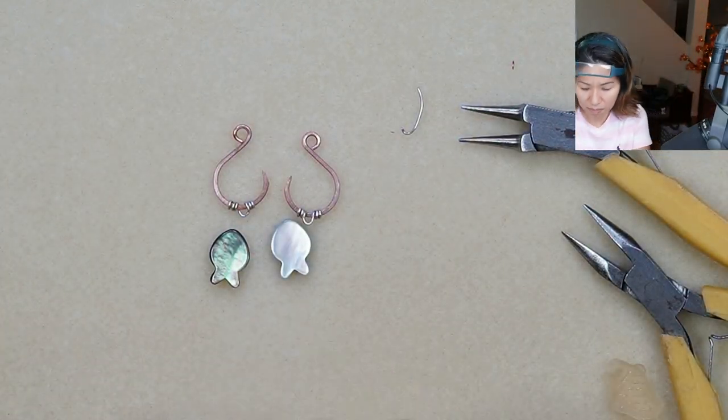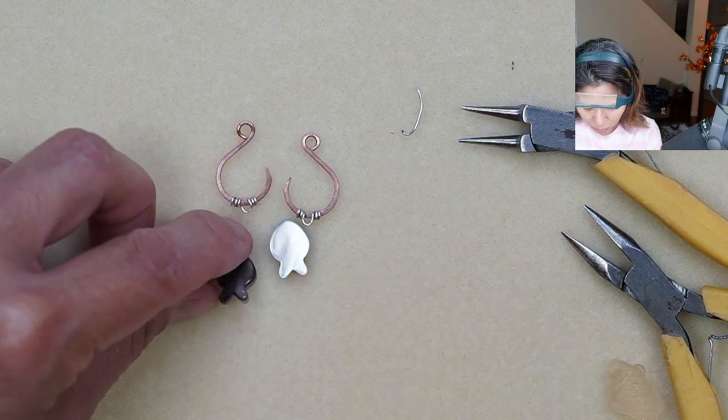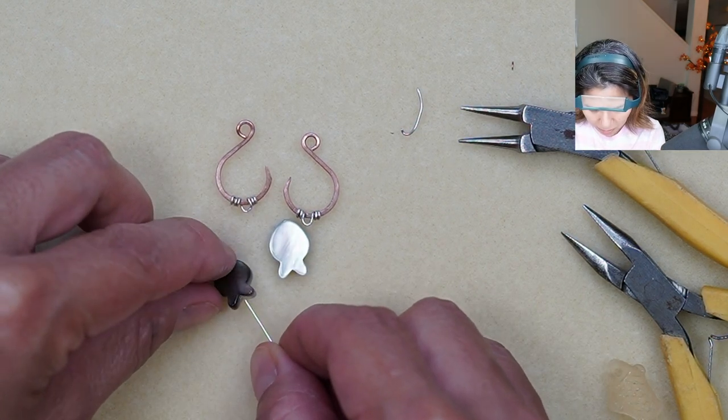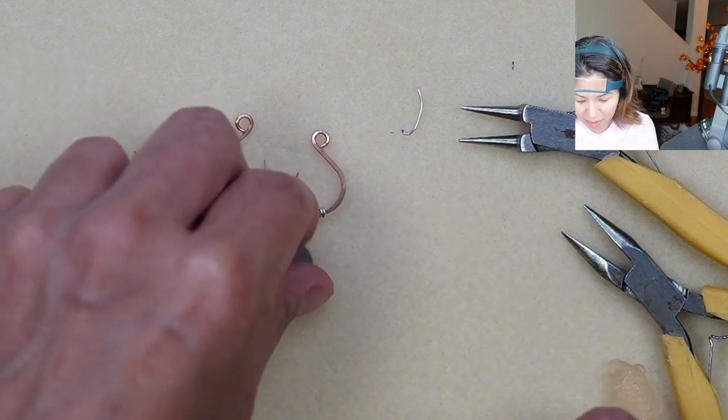Now it's time to add your fish onto your hooks so I have two 22 gauge head pins and I'll be putting the wire into the fish with the little pin at the bottom that stops the fish from falling off.